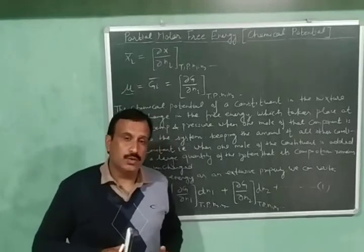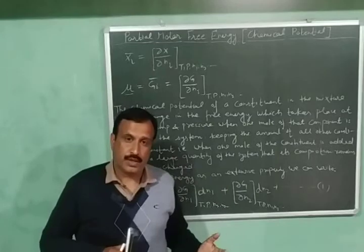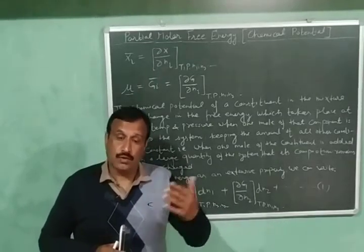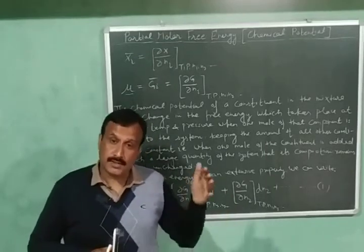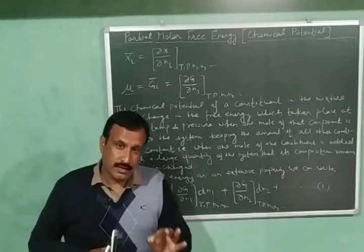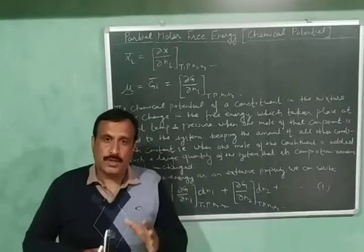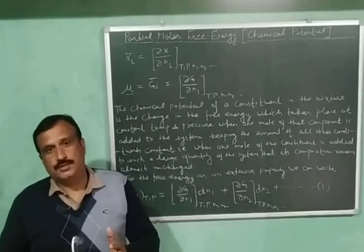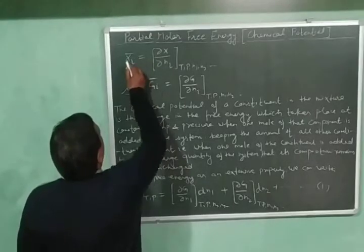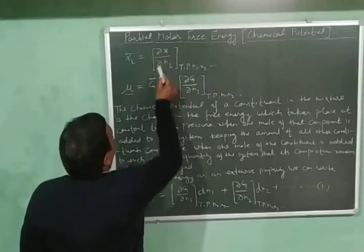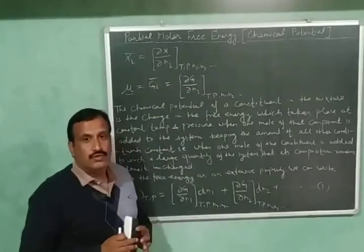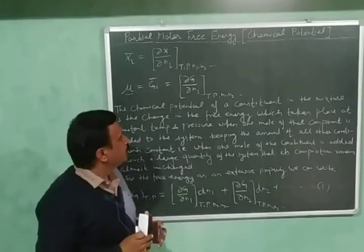In my previous video we discussed Partial Molar Quantities. The Partial Molar Quantity of a component is defined as the change in the extensive property of the mixture when one mole of the pure component is added such that the temperature, pressure, and composition of the system remains constant. It is represented as X̄ᵢ = (∂X/∂Nᵢ) at constant temperature, pressure, and number of moles of all other components.